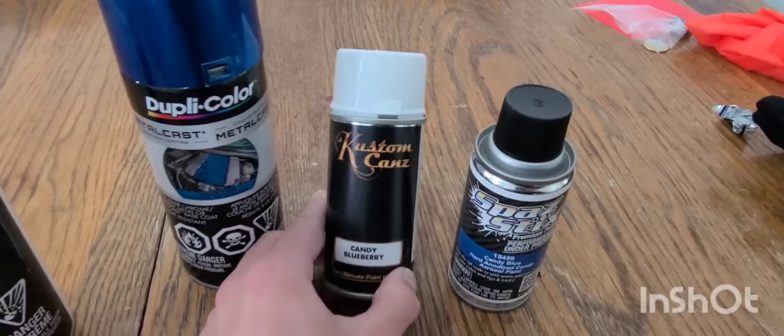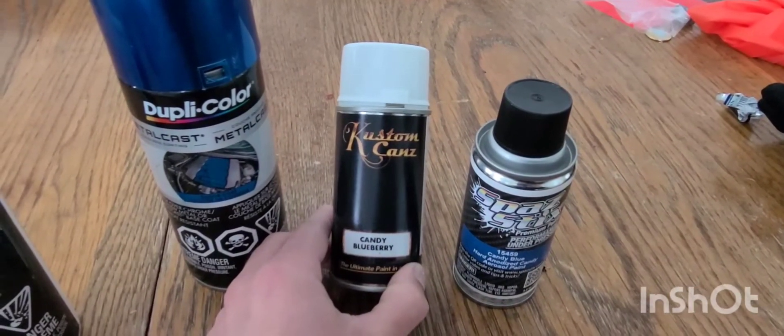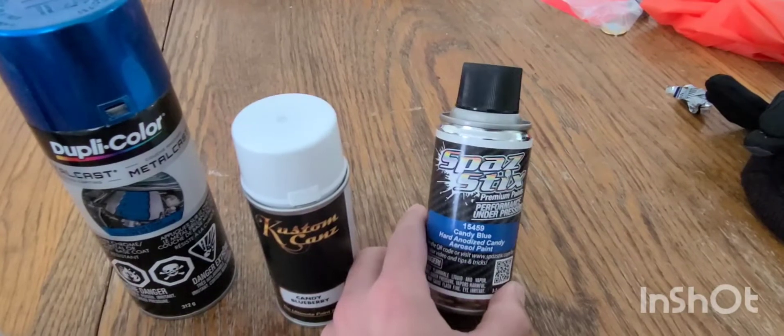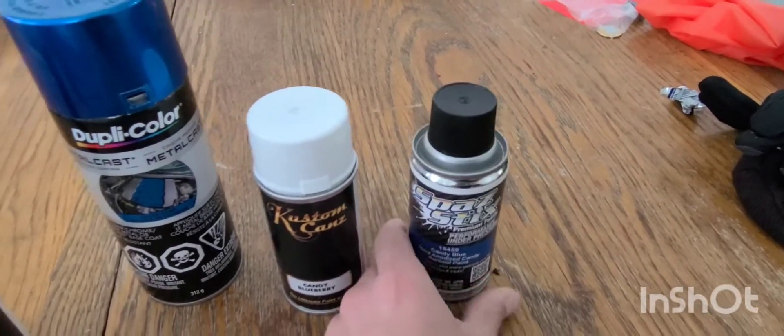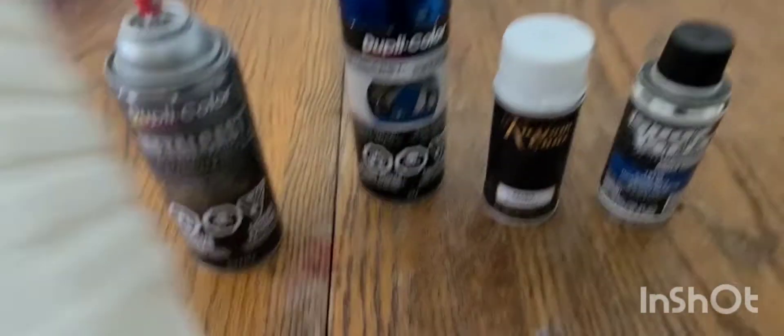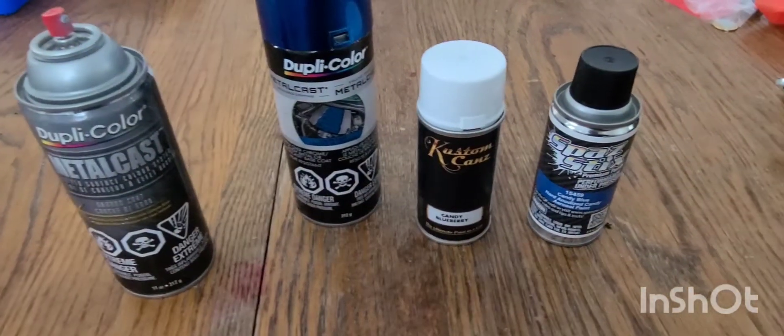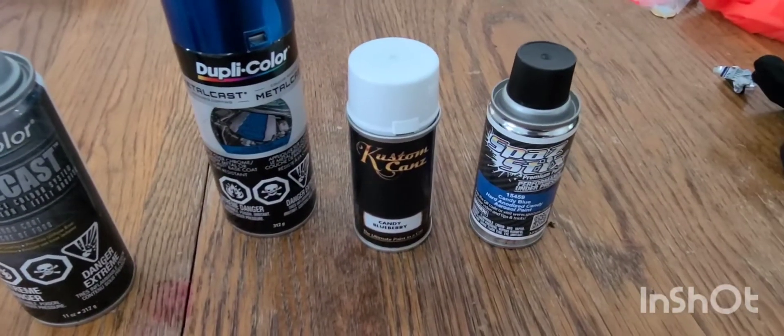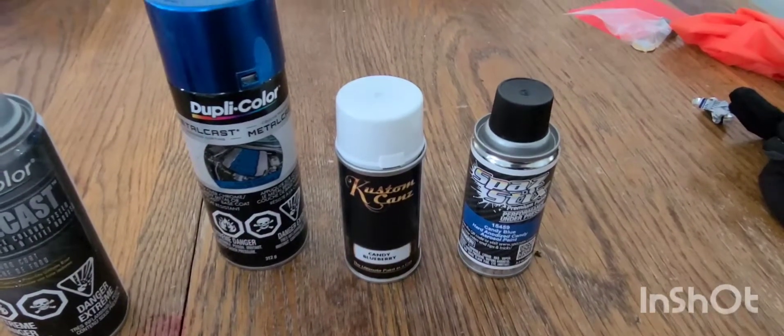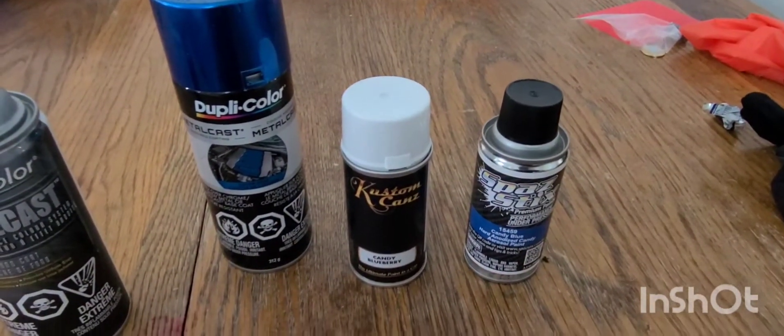So we got Dupli Color Metal Cast, we got Custom Cans Candy Blueberry, and we got Spaz Sticks Candy Blue, and I got my trusty little bottle here that I'm gonna apply the base coat to.